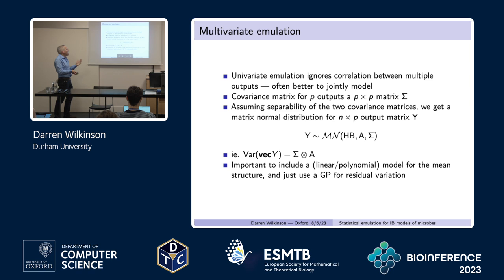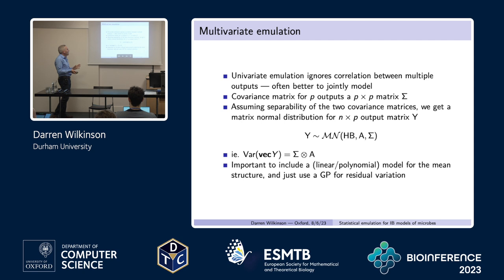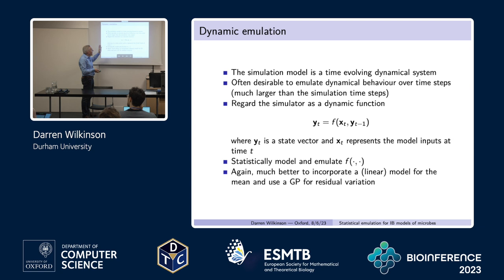We may also want to build multivariate emulators. The standard thing to do is to regard the output as multivariate normal, and then you get into all of the matrix normal distribution theory. It's all fairly standard stuff — that's the kind of thing that we do.